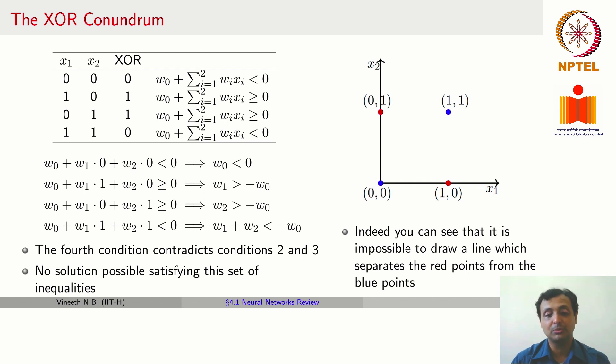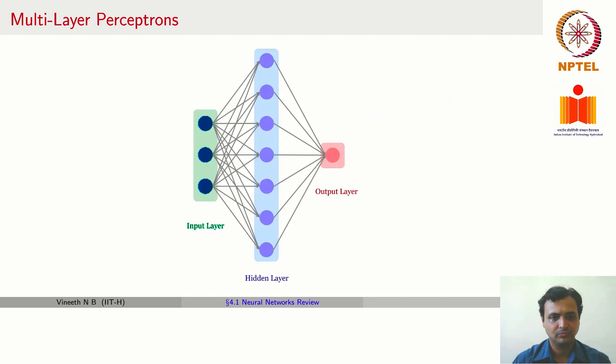It is impossible to draw a line which separates the red points from the blue points here, and that leads us to the concept of a multilayer perceptron. A multilayer perceptron, as the figure shows, is not restricted, unlike a perceptron, to only an input layer and an output layer, but also has the convenience of including a hidden layer of neurons. The number of neurons in this hidden layer is a design decision.